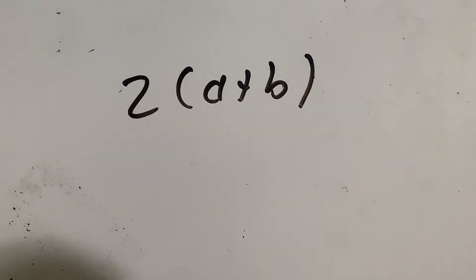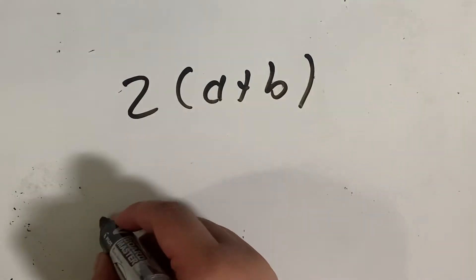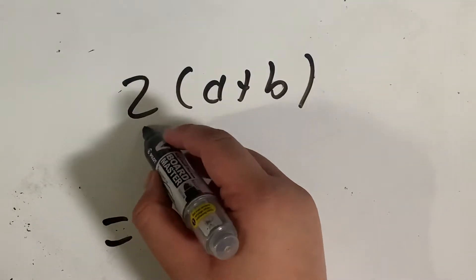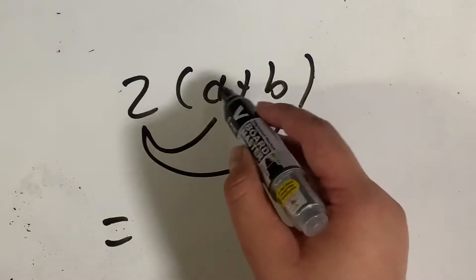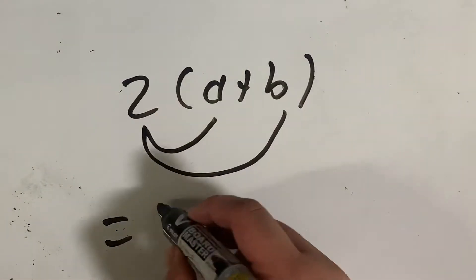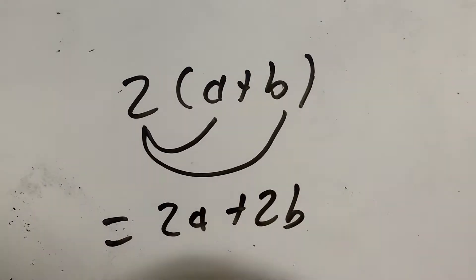Alright, so the distributive property states if we have a factor like 2 multiplying an expression like a plus b, it would have to expand like this where 2 has to multiply a, then it has to multiply b. You're distributing 2 along the two terms. That makes 2a plus 2b. Thus it's called the distributive property.